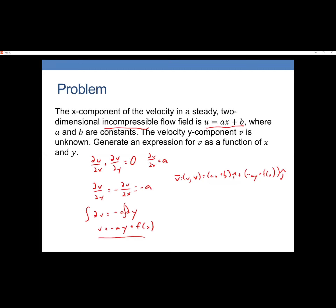A student asked if they can write the vector field using brackets instead of i-hat j-hat notation. Yes, that's fine — just use some kind of standard vector notation. The instructor tries to use the same notation as the textbook, where x velocity is u, y velocity is v, and z velocity is w, but brackets or other standard forms are acceptable.